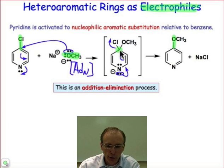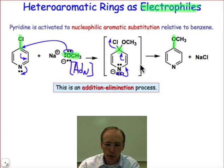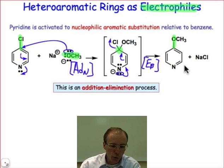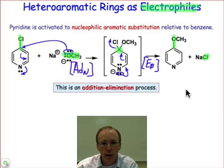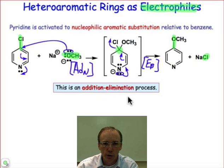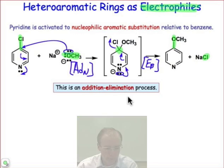This creates a tetrahedral intermediate. The tetrahedral intermediate undergoes a β elimination. The E_β step displaces the best leaving group, which is the weakest base — and that's chloride. The net result is a substitution reaction through the addition-elimination sequence. That's how we do substitution at sp2 carbon atoms.